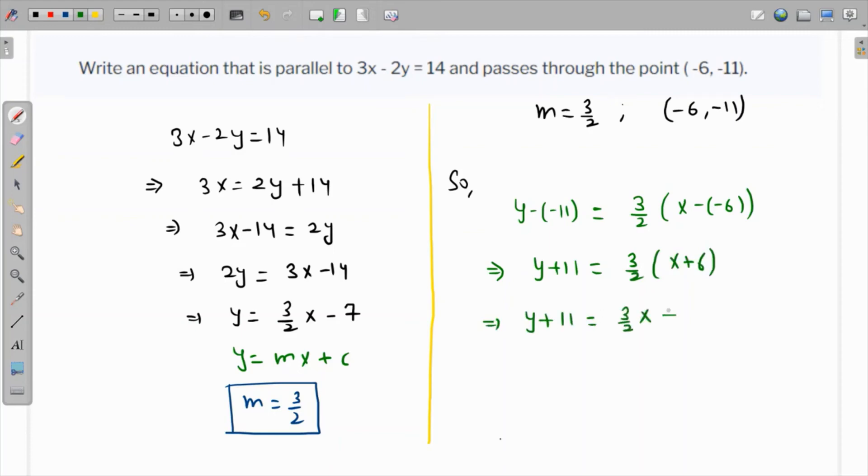So this will become y plus 11 is equal to, let's open up the parentheses, that's 3 over 2x plus... 6 times 3 is 18, 18 over 2 is 9. So finally if we subtract 11 both sides then y is equal to 3 over 2x minus 2. So this is the required answer, thank you.